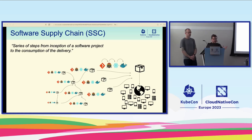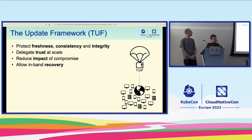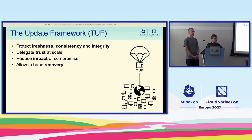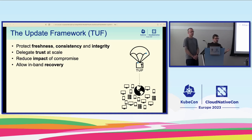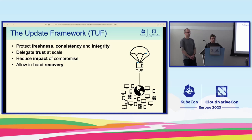TUF protects that process. More specifically, TUF protects integrity, consistency, and freshness of content, and it does so by using cryptographic signatures. Most tools that protect something use cryptographic signatures. TUF can do more than that — it allows you to delegate trust at scale. Modern software is composed of many components owned by different entities, so you really want to be able to delegate trust so that a client who trusts the owner of foo doesn't also have to trust the owner of bar.